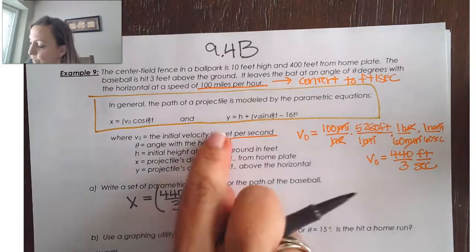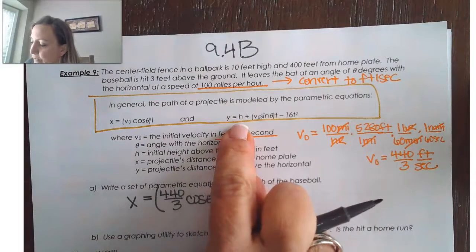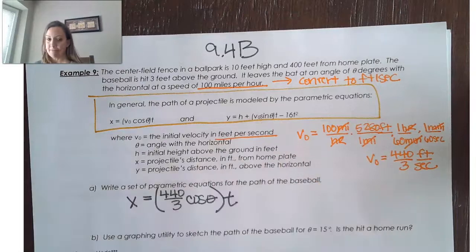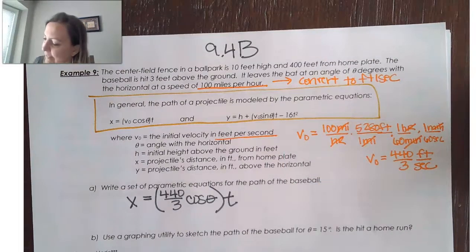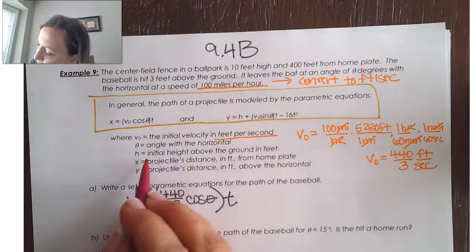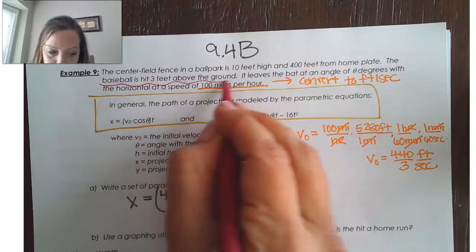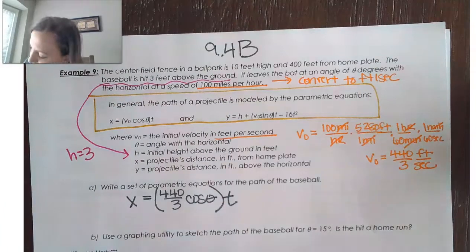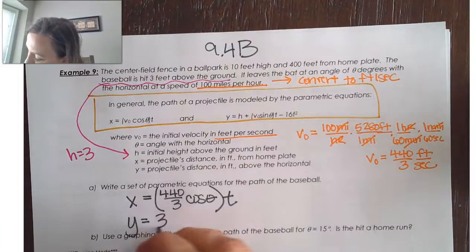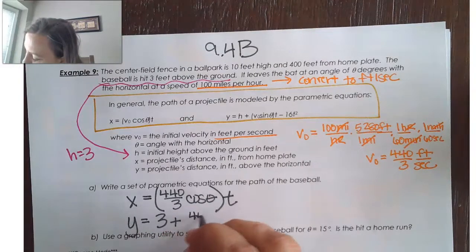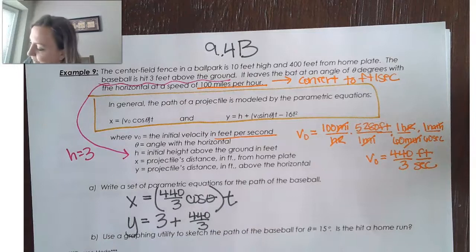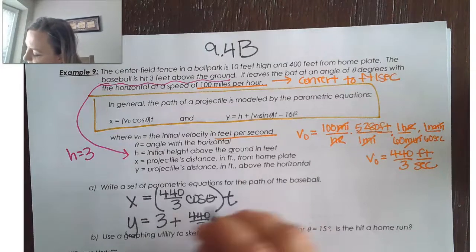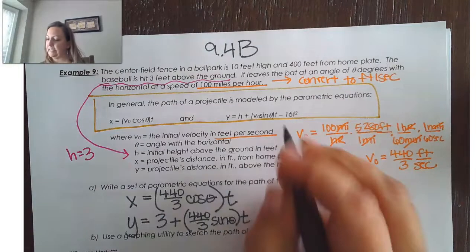And we want something for y as well. We know v sub 0 times sine theta is going to change depending on the angle that it's hit. We need to know h. If we look at that, we can see that h is the initial height above the ground, says the baseball is hit 3 feet above the ground. So, that's going to tell me that h is 3. And now we can use that idea that h is 3. We found that the velocity is 440 over 3 feet per second. But now we have the sine of theta as our coefficient of t, and then minus 16 t squared.